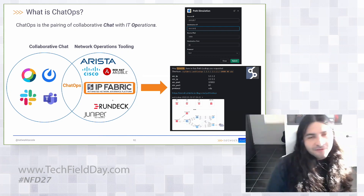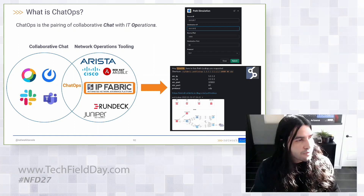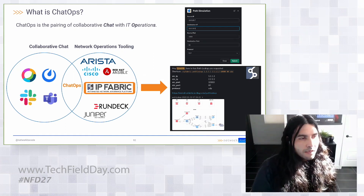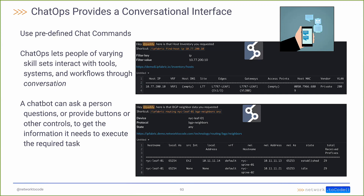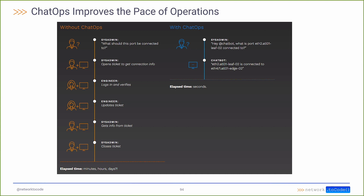If you know Network to Code, you may have heard about ChatOps. We're working hard to provide users with the ability to interact with third-party applications through chat platforms such as Slack, Teams, or WebEx. Our framework provides predefined commands that interactively give users a simple flow for interacting with these applications. This really broadens the scope of who can communicate and use these tools and workflows, as the commands are simple and limited in scope — speeding up processes by cutting out repetitive and time-consuming tasks.